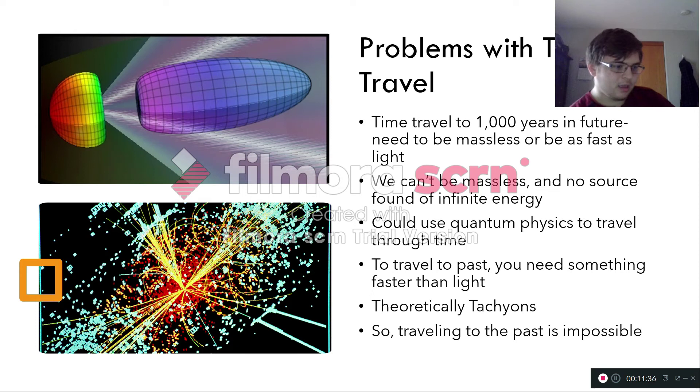Now, here's some problems with time travel. In order to time travel, you have to be either really massless, like particles, as you can see in one of these pictures, or be as fast as the speed of light. Well, we can't be massless because we wouldn't be ourselves. We wouldn't exist, in other words. And we don't know how to harvest the infinite energy from the sun. So so far, not good. However, if we could understand the quantum physics, we could possibly travel through time. Because quantum mechanics are the smallest thing you could think of. They're basically massless, and they could travel right at the speed of light.